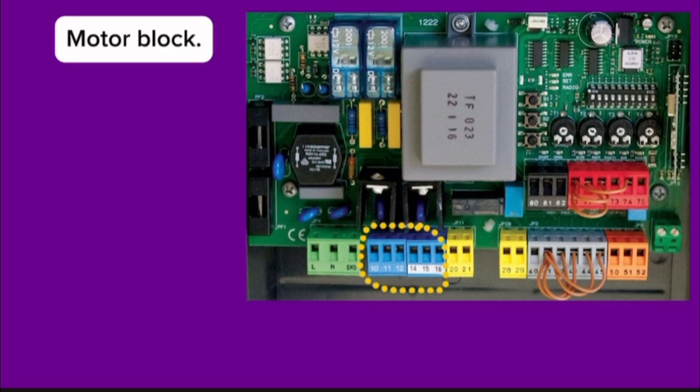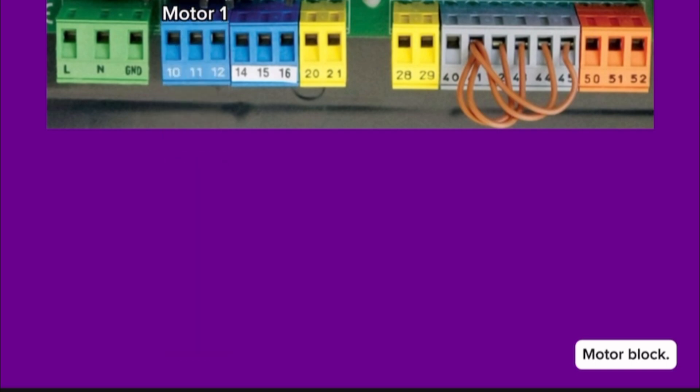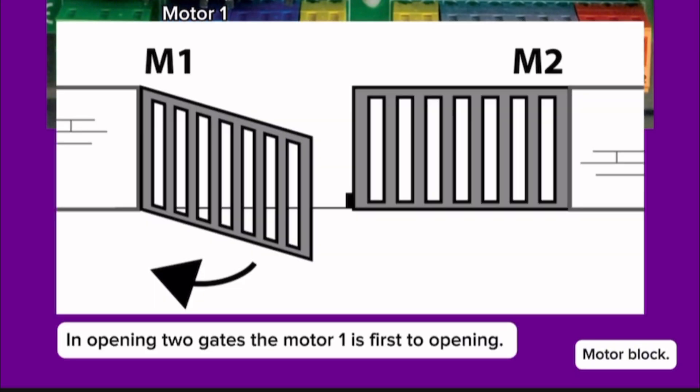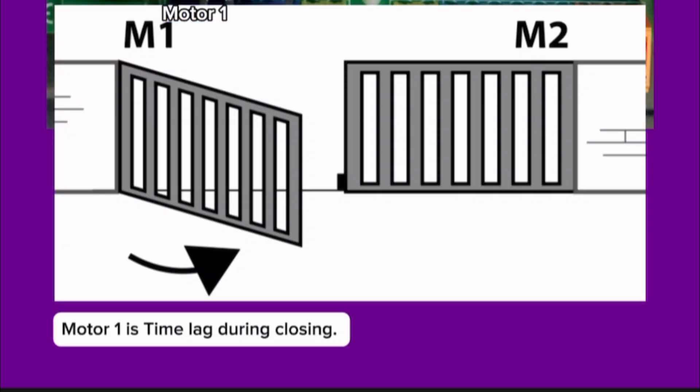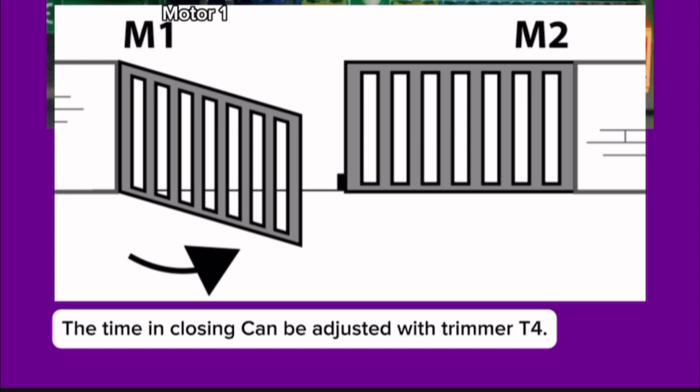Motor block. Pin 10, pin 11, and pin 12 is for motor 1. In opening two gates, motor 1 is first to open. Motor 1 has time lag during closing. The time in closing can be adjusted with trimmer T4.